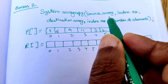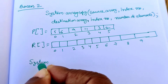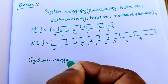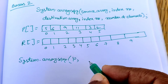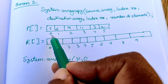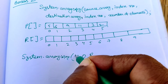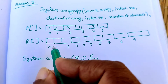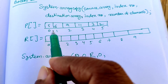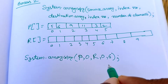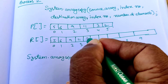So we write System.arraycopy with source array p, starting from index 0, destination r, starting at index 0, copying 6 elements. This automatically stores elements 5, 6, 9, 11, 3, 2 into r one by one.